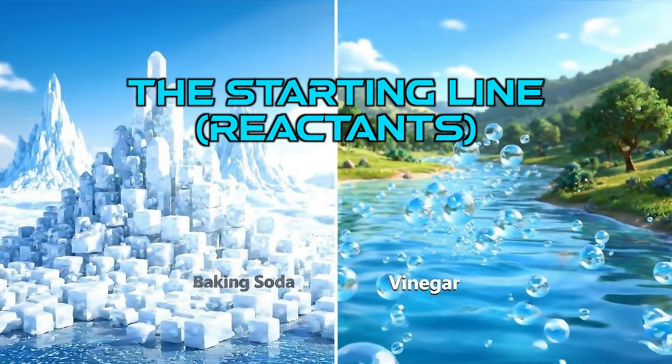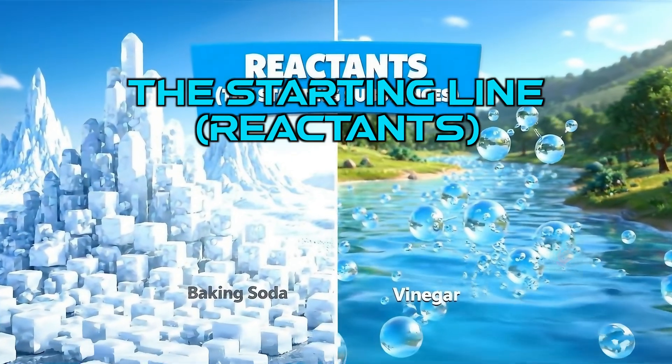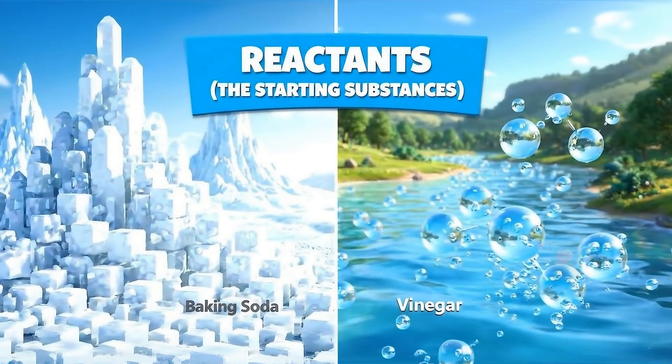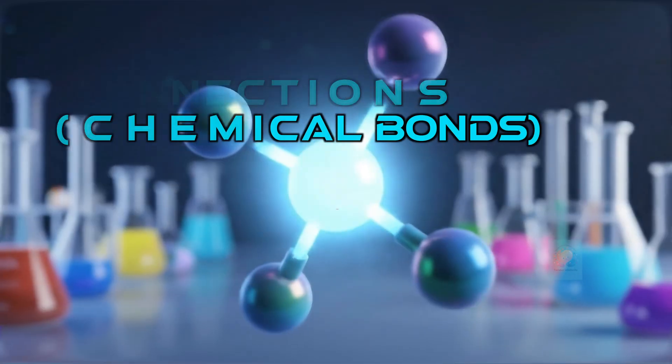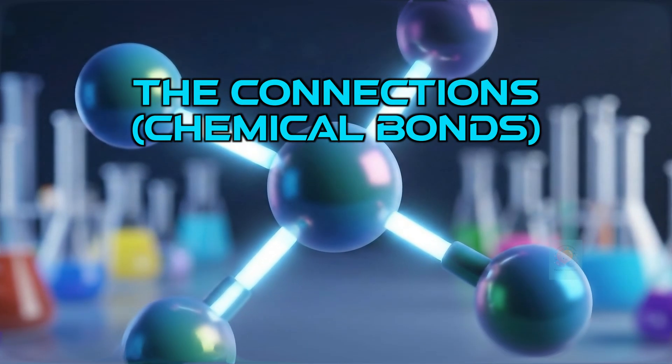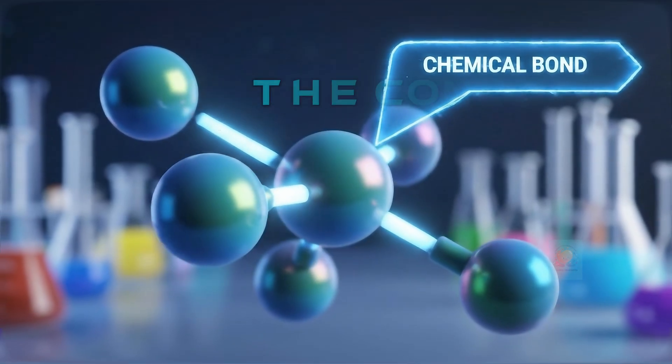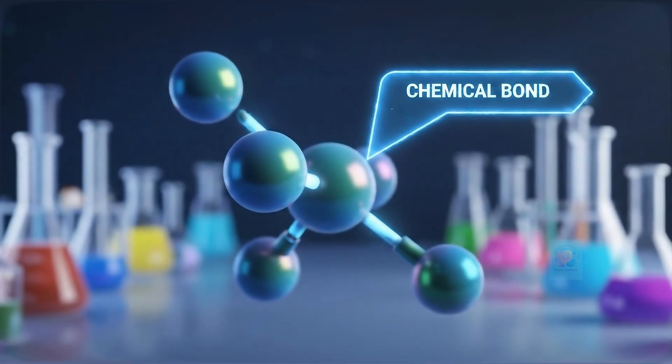The substances we start with in a chemical reaction are called the reactants. Think of them as our starting team of players. In a molecule, atoms are held together by connections called chemical bonds. This is the glue that keeps them on the same team.